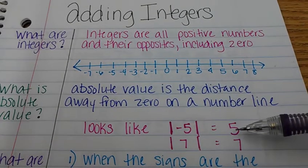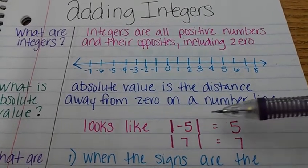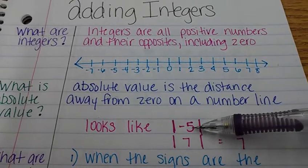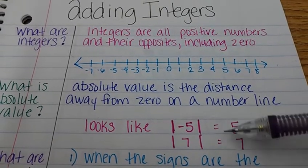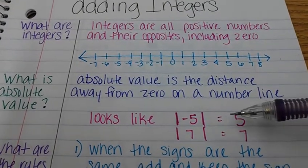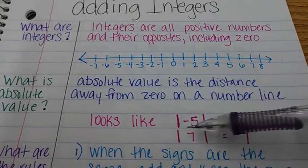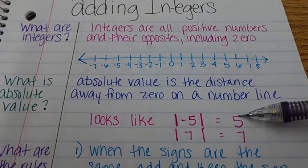Basically what you are doing is if it has a negative sign you're ignoring it. You're just ignoring the negative sign because you're talking about how far away from zero it is. Doesn't matter whether it's a positive direction or a negative direction. How far is it away from zero?